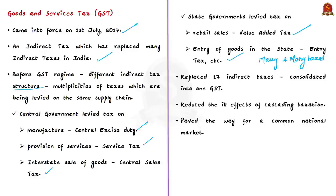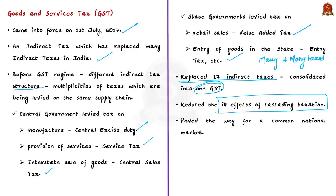The introduction of GST was a significant step in indirect tax reforms in India because it replaced 17 indirect taxes, consolidating them into one GST. This amalgamation of large numbers of central and state taxes into a single tax reduced the ill effects of cascading taxation — that is, double taxation — in a major way. It also paved the way for a common national market. From the consumer's perspective, the biggest advantage is the reduction in the overall tax burden on goods, previously estimated at around 25% to 30%.